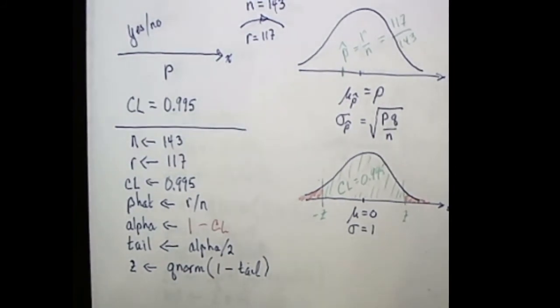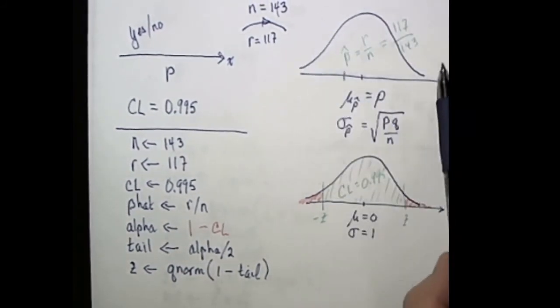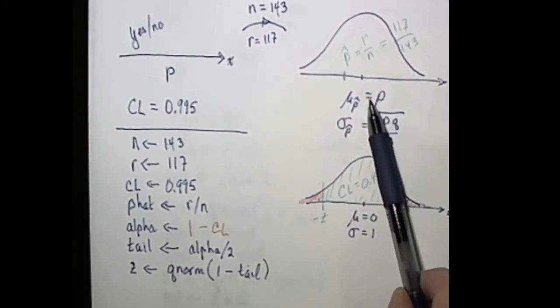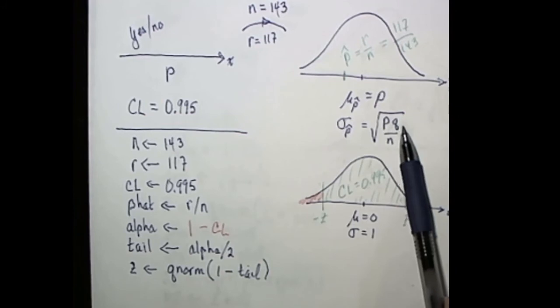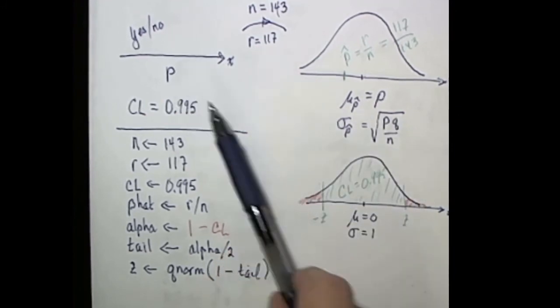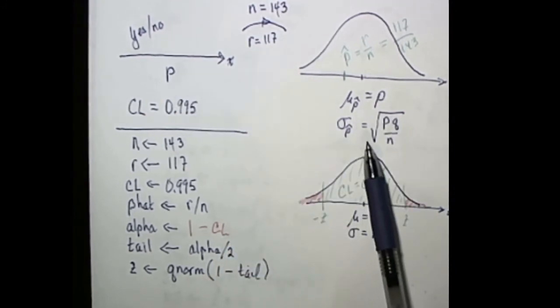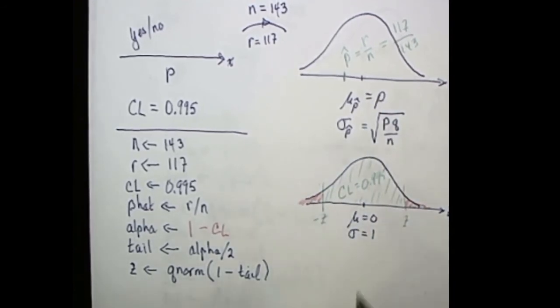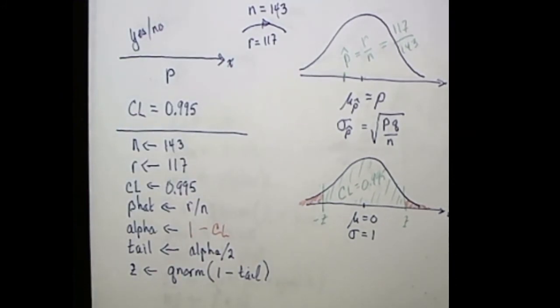Now another thing that we need to know is the standard deviation of this distribution. We don't know that because we don't know what p is, and so we can't find out what q is. q is the probability of failure. It's always one minus p, but we don't know what p is. So we'll approximate this with the best information we have available.